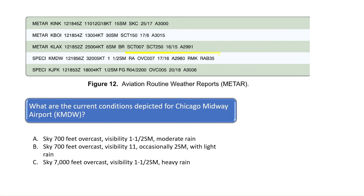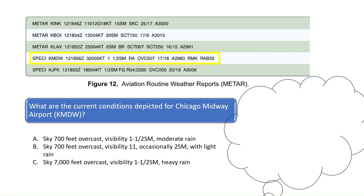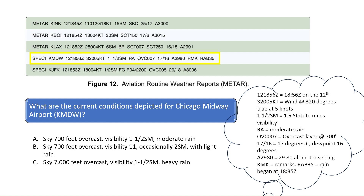What are the current conditions depicted for Chicago Midway Airport? See Chapter 13 of the Pilot's Handbook of Aeronautical Knowledge for specific information on how to decode METARs and TAFs. The forecast at Chicago Midway Airport reads like this: at 1856 Zulu on the 12th day of the month, the wind is from 320 degrees true at five knots with one-and-one-half-mile visibility. There is moderate rain as indicated by the letters RA. Sky coverage is at 700 feet overcast. The temperature is 17 degrees Celsius and the dew point is 16 degrees Celsius. The altimeter setting is 2980, and rain began at 1835 Zulu time. The correct answer is A.